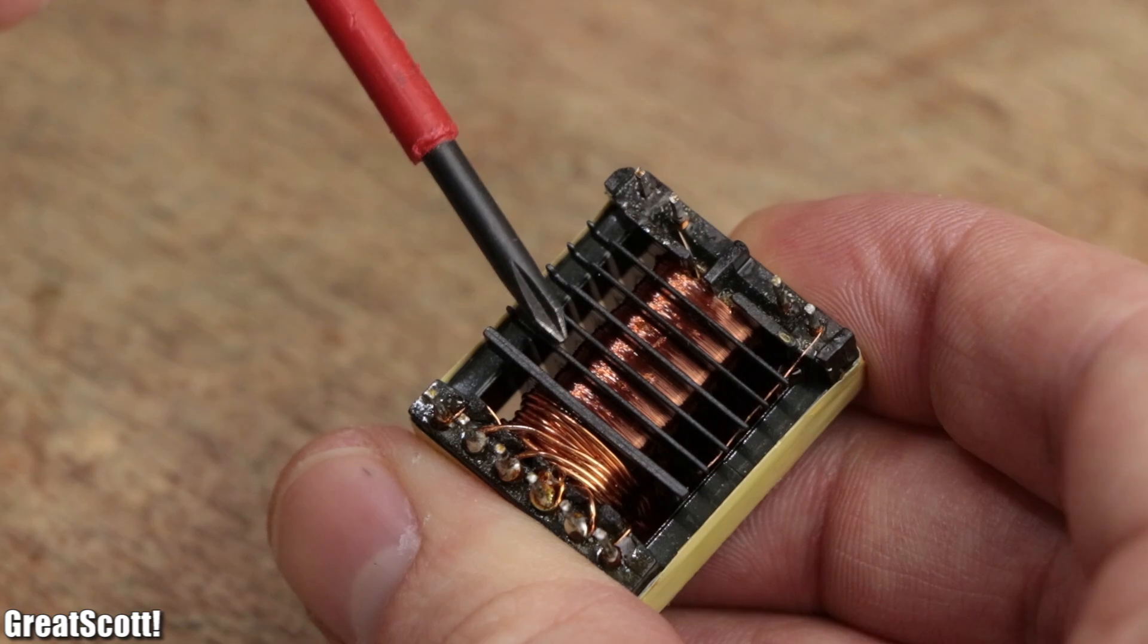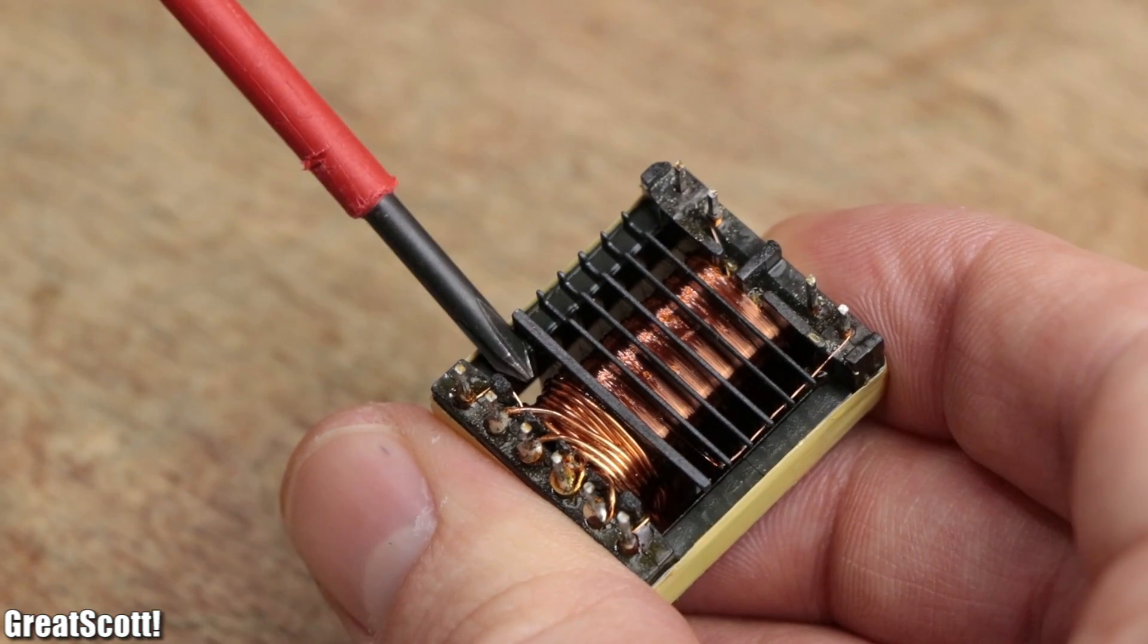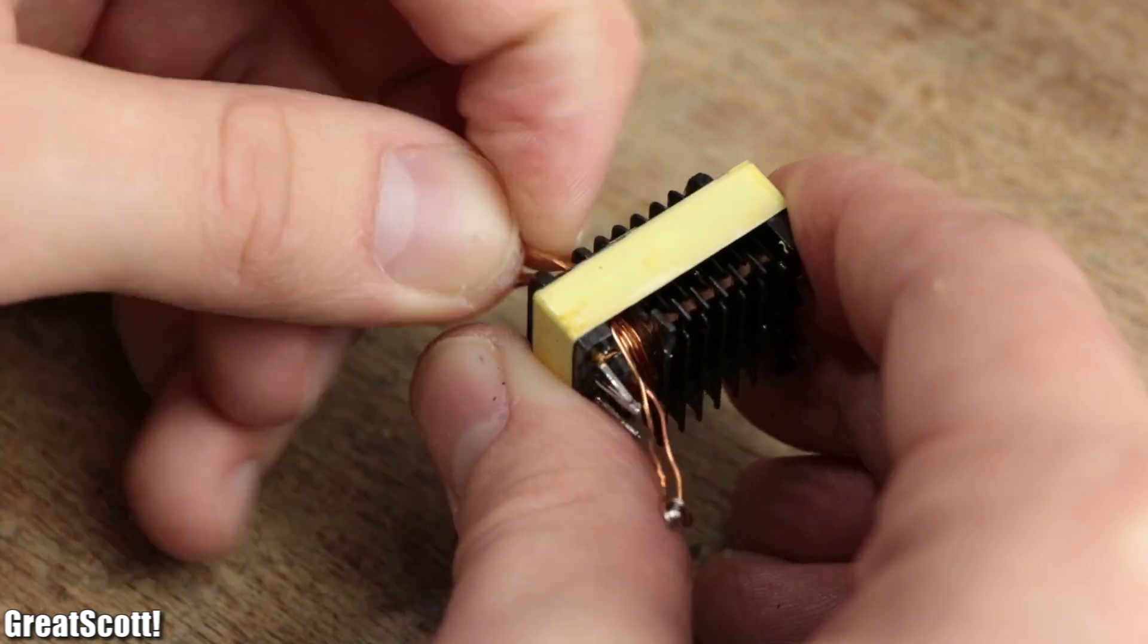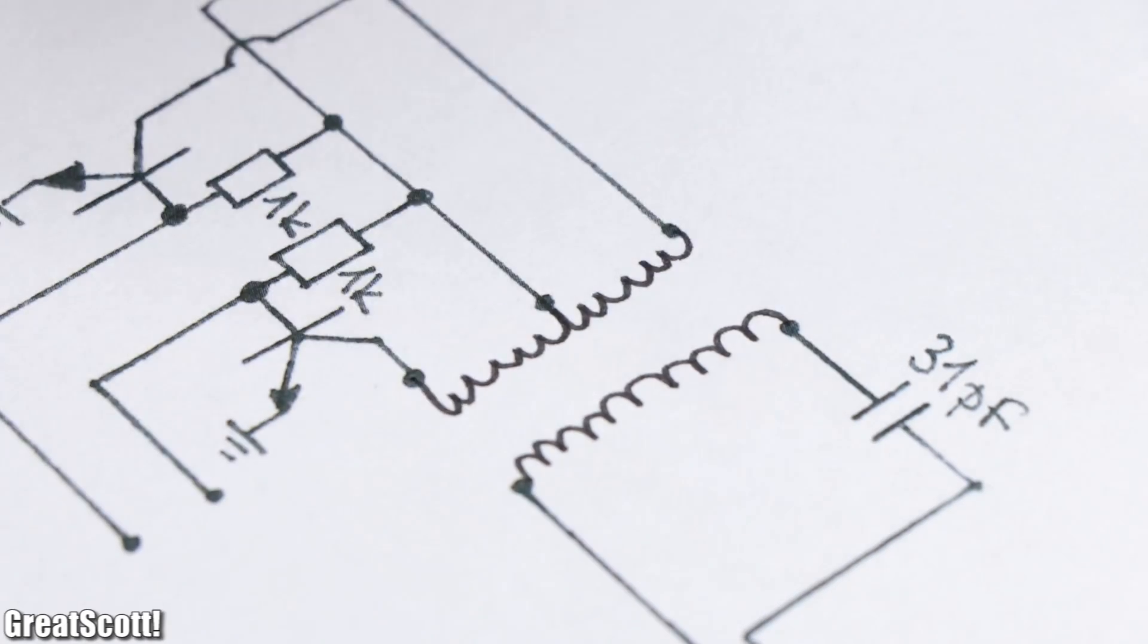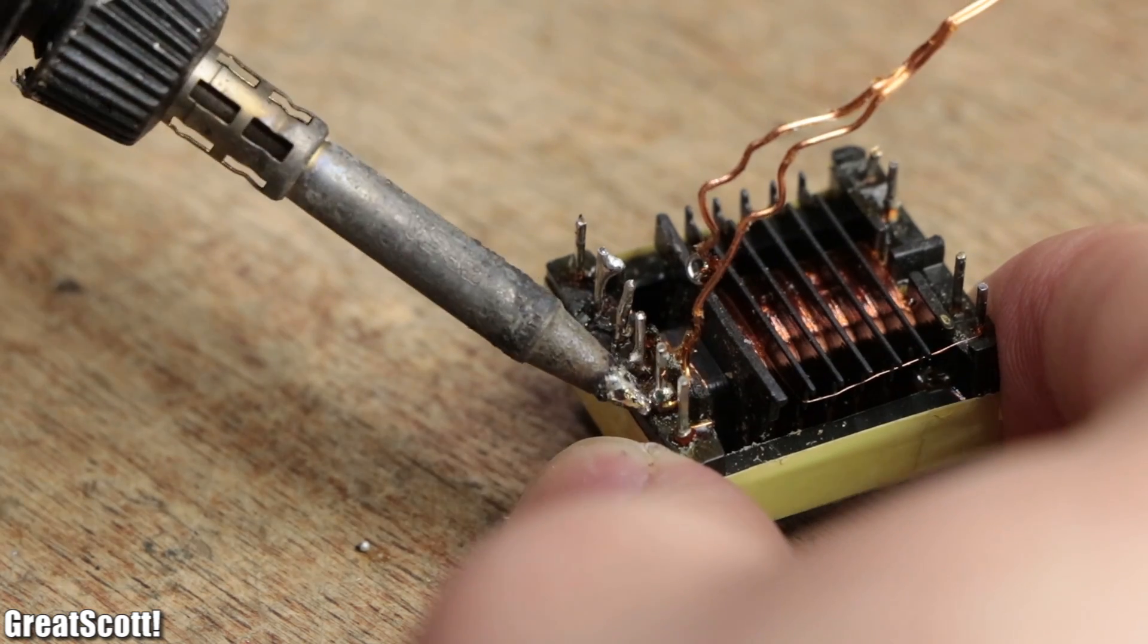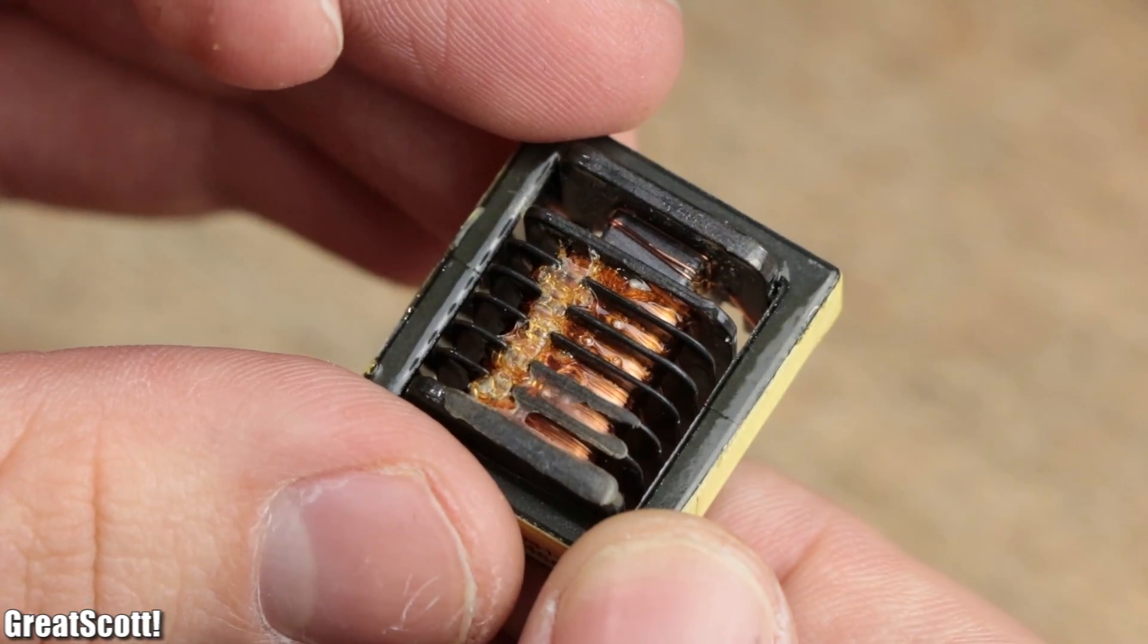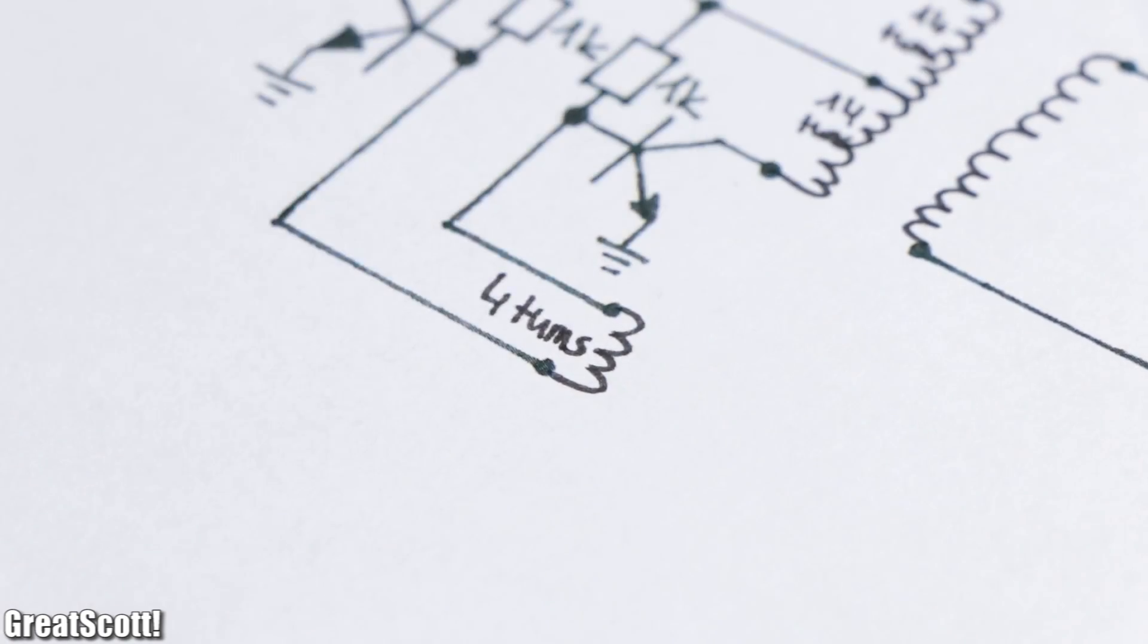On the inside we can see a secondary coil with a lot of windings and two primary coils with fewer windings. After removing two solder joints and slowly unwinding the wires, I realized that the transformer uses a center tap primary coil which consists of 14 turns each. The last remaining inconspicuous primary coil is a feedback coil that only consists of around 4 turns.